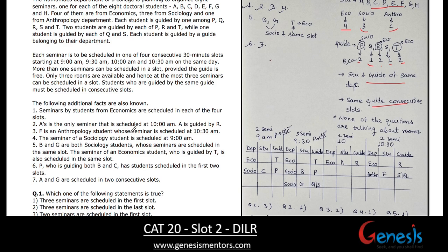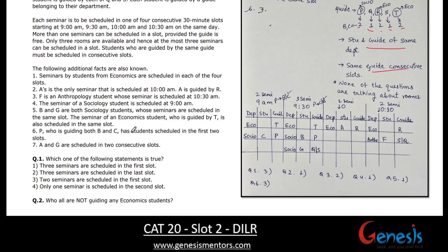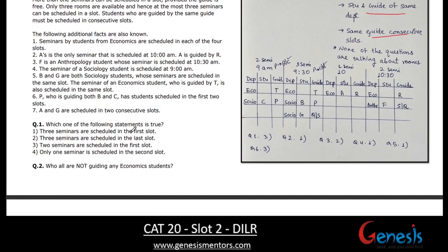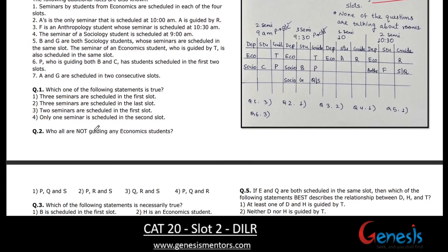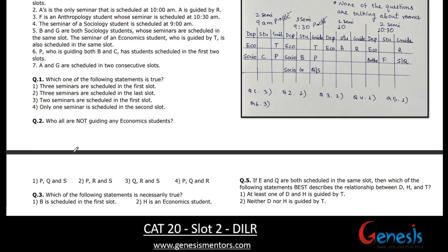The parameters here are: guides, students, slots, and rooms. We will first go through the questions to get a fair idea of how to represent these conditions and what the master diagram should look like. One question asks about the number of seminars in particular slots — for example, three seminars in the first slot.